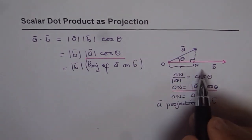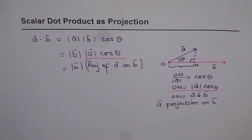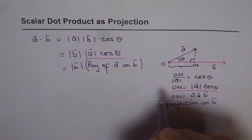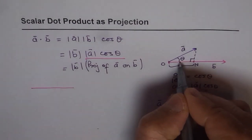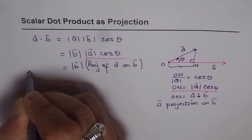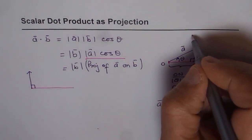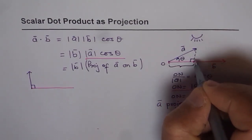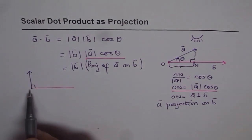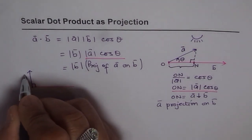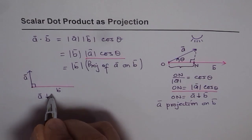From this property we can get other relations. If my angle theta increases, let's look at those conditions. Let's say this is my vector B, and I try to increase theta. If the angle becomes 90 degrees — projection is like a shadow; if I have a sun here, the shadow shows me the projection. In this case, with A perpendicular to B, the projection of A on B is zero.